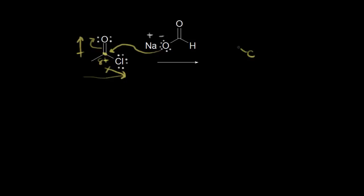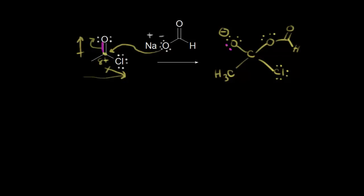Let's draw our tetrahedral intermediate. The oxygen now has three lone pairs of electrons, giving it a negative one formal charge. These electrons in magenta move off onto our oxygen. Bonded to this carbon we have a CH3 on the left and a chlorine on the right with lone pairs of electrons. These electrons in blue form the bond between this carbon and the formate oxygen. We have our tetrahedral intermediate.